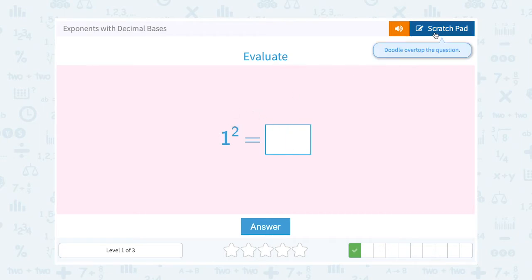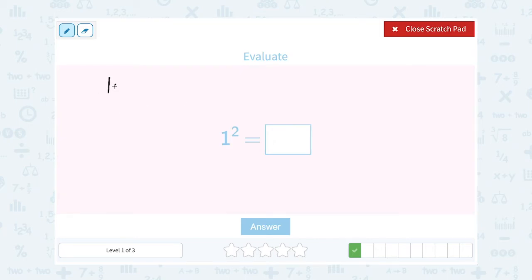1 to the second power. Well remember, we're multiplying the base, or the big number by itself, the exponent, that little number on top, number of times. So 1 to the second power, or 1 squared, means to multiply 1 out twice. Well 1 times 1 just gives me 1.